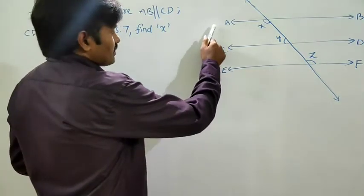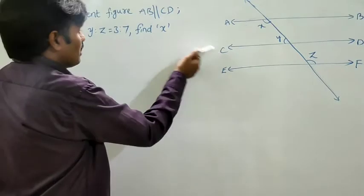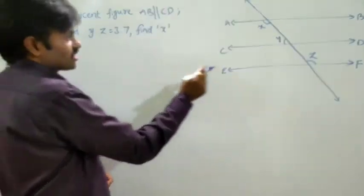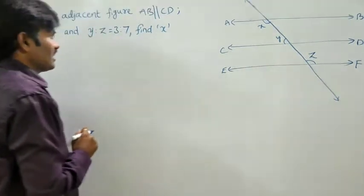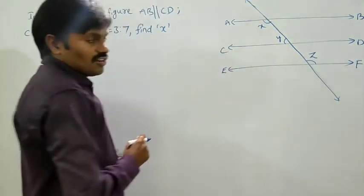In the given figure, AB is parallel to CD and CD is parallel to EF. Also given the ratio of the two angles Y and Z as 3 is to 7, then find the value of angle X.